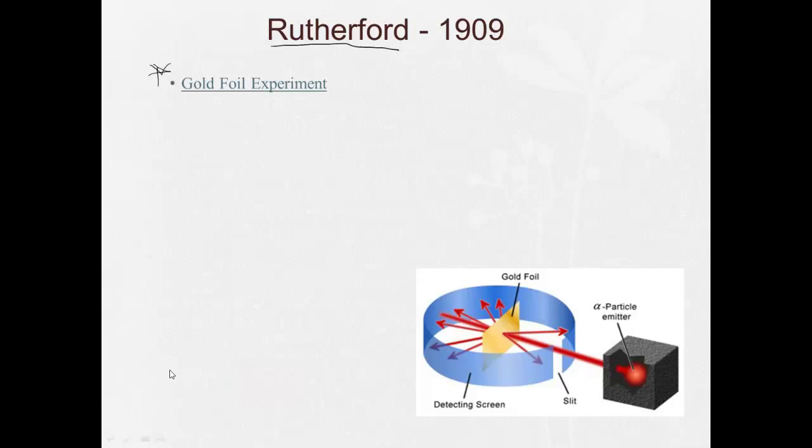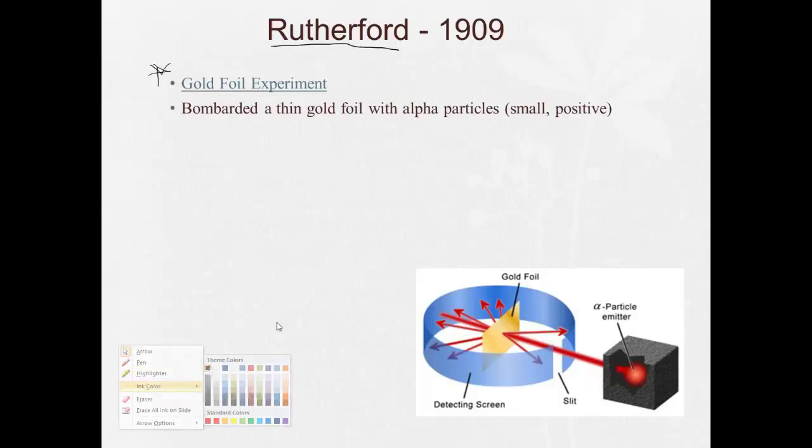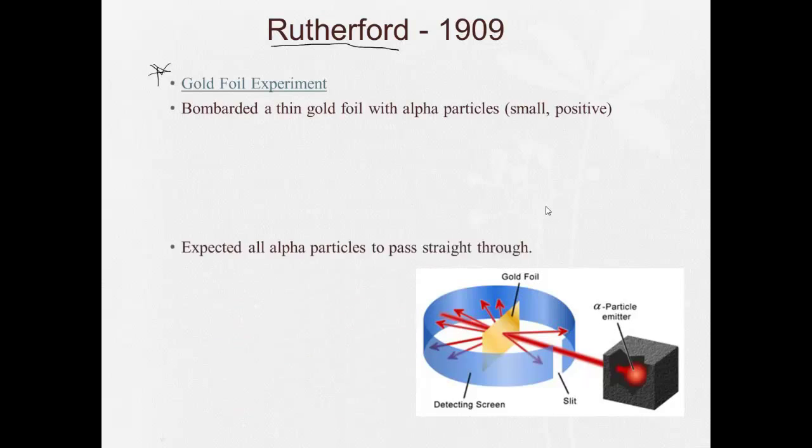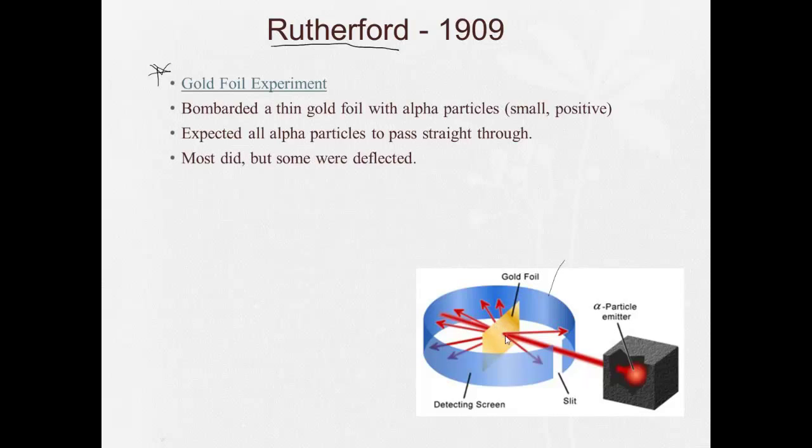Here's the important things to remember from that. One, you have to remember that Rutherford bombarded a thin gold foil with alpha particles. That he expected all the alpha particles to pass straight through. Most passed straight through. Kind of like we can see in the picture here. Most of them passed straight through, but some were deflected. And we have to remember his conclusions. Conclusion one, the atom is mostly empty space. Two, the atom has a small, dense, positive nucleus at the center. And electrons are located around the nucleus. Those are the key things we have to remember from the Rutherford gold foil experiment.